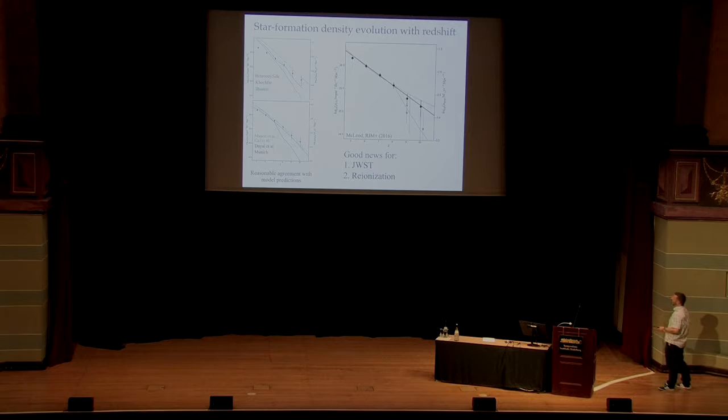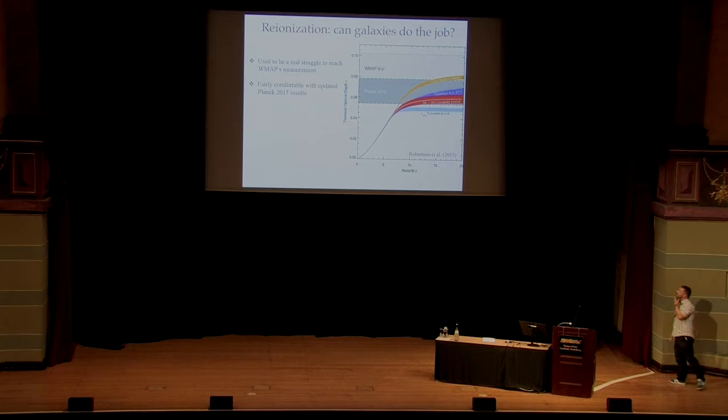So this is good news. JWST will have plenty of galaxies to look at, and we probably will be able to do reionization with the galaxies alone. So I won't talk about this very much, but from an observer's perspective, when we say, can we explain reionization with the galaxy population, what we actually mean is, can we explain the optical depth that either WMAP or Planck comes up with, based on our knowledge of the star formation history of the universe?